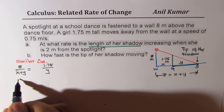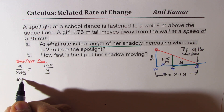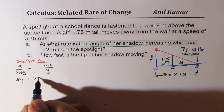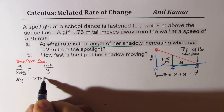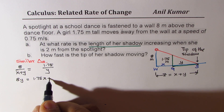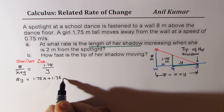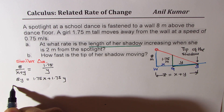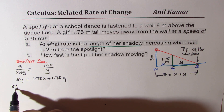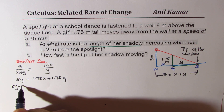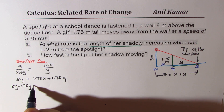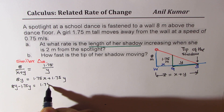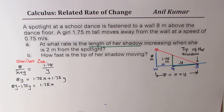Cross multiplying: 8y = 1.75x + 1.75y. Bringing terms together: 8y − 1.75y = 1.75x, which gives 6.25y = 1.75x. That is your equation to work with.